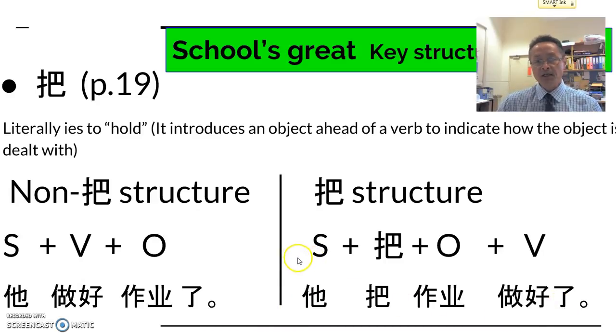Alright, so when you're learning the 把 structure, try and remember that in the non-把 structure, it's subject, the verb, object. So practice it with the non-把 structure first, and then convert your non-把 structure into using verb following this pattern: subject, 把, object, verb.